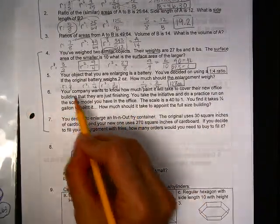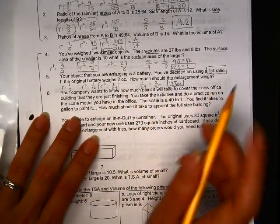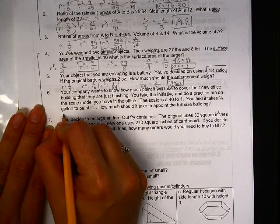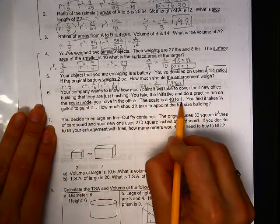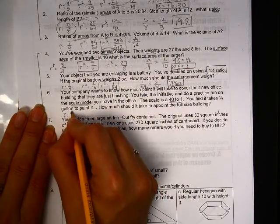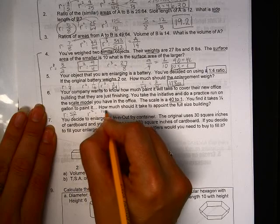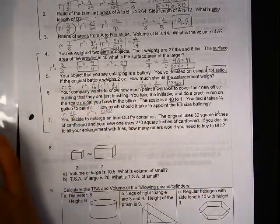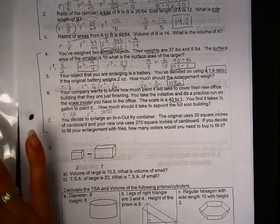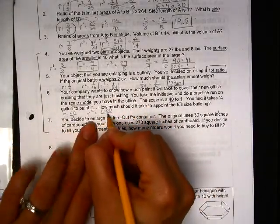Let's go ahead and look at number 6. So we're painting, covering something, which means I'm going to be talking about R squared, probably. A practice on scale model. The scale is 40 to 1. So R is 40 to 1, which means that R squared is 1600. That is right, isn't it? 40 times 40? Yeah. To 1. So this is my ratio of my areas.